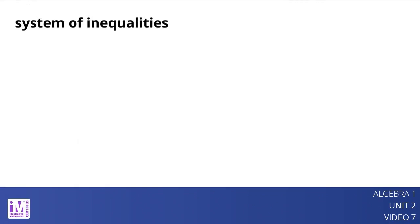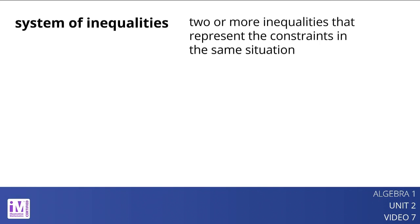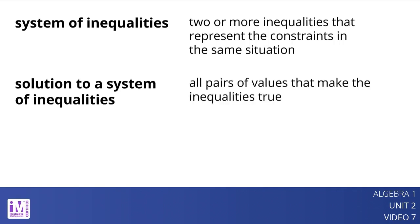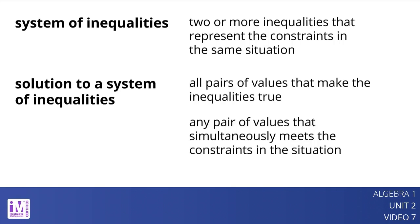A system of inequalities is two or more inequalities that represent the constraints in the same situation. The solution to the system of inequalities is all the pairs of values that make the inequalities true, or any pair of values that simultaneously meets the constraints of the situation. The solution to the system is often represented by a region on a graph.